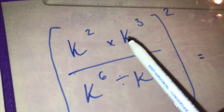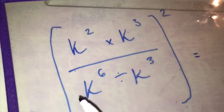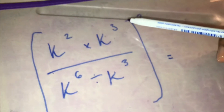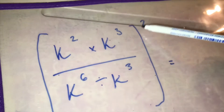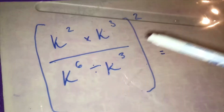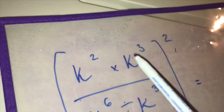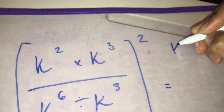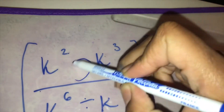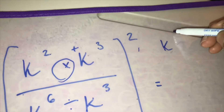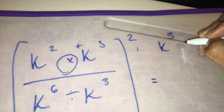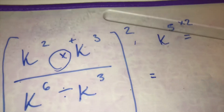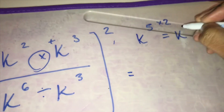Right, this one here: you've got k to the power of two times k to the power of three, divided by k to the power of six divided by k to the power of three, and both of these are to the power of two. So you apply the power of two to each part. Work out this bit first — we're multiplying, so we add the powers: two add three is five, then times that by two — so that becomes k to the power of ten.